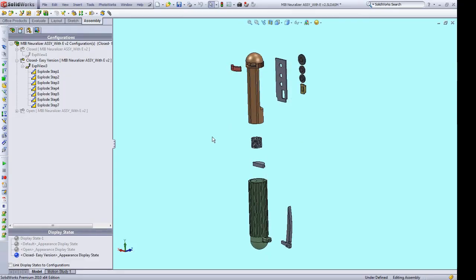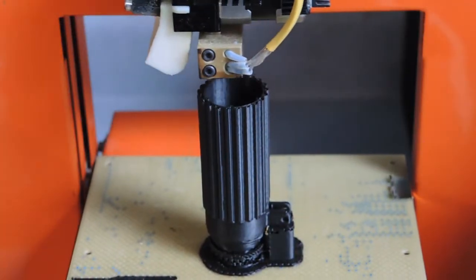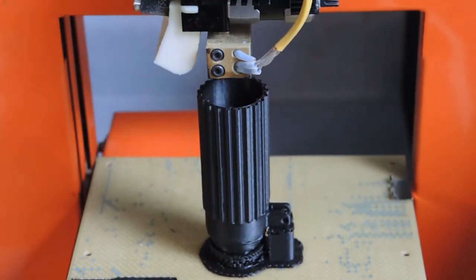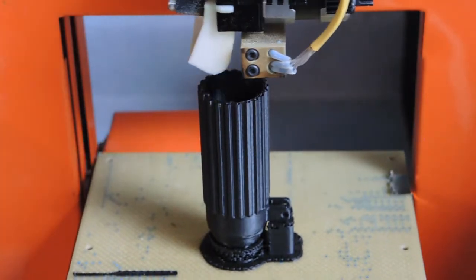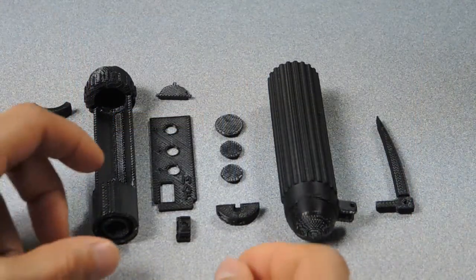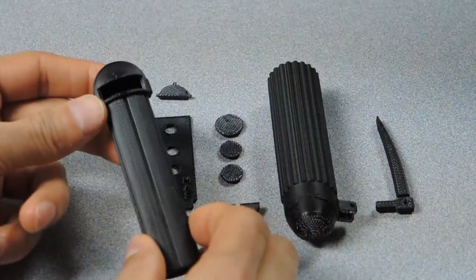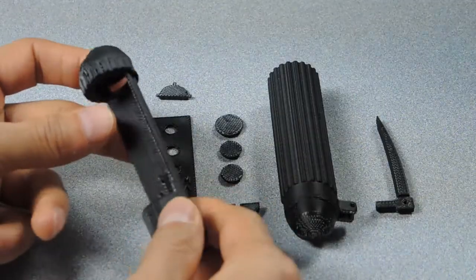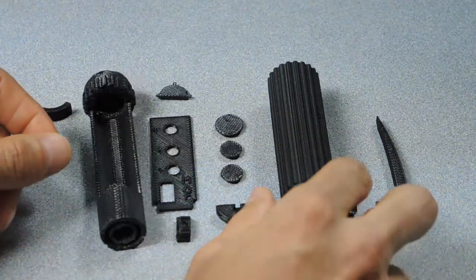All right, and generally how the design works, we have to start printing some pieces out. Here you can see all the printed pieces laid out and to keep this build simple, we're not going to do very much post-processing at all. We're just going to do a little cleanup with acetone.